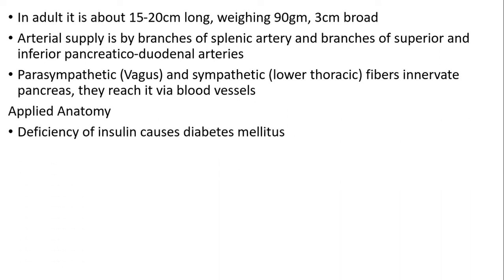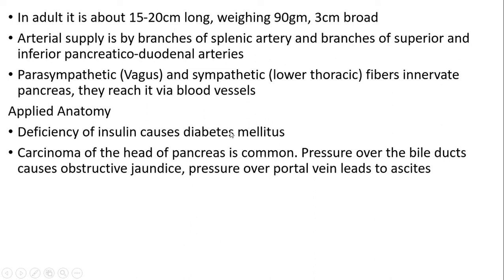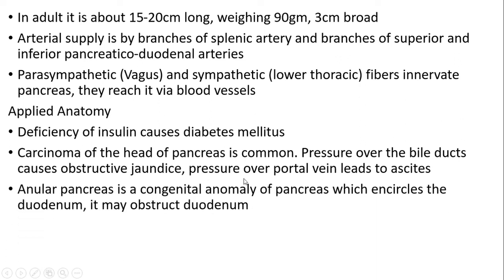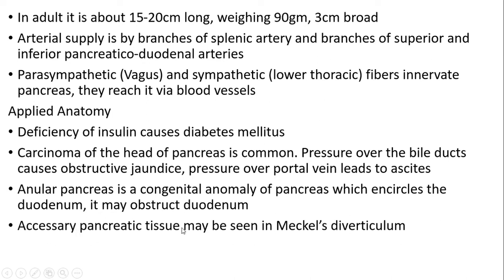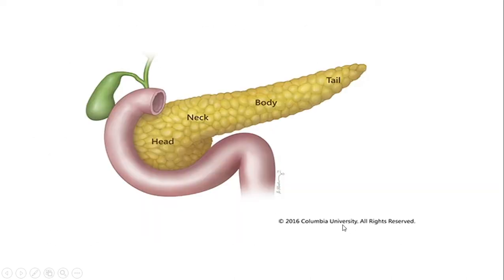Applied anatomy: deficiency of insulin causes diabetes mellitus. Carcinoma of the head of the pancreas is common. Pressure over the bile duct causes obstructive jaundice; pressure over the portal vein leads to ascites. Annular pancreas is a congenital anomaly of the pancreas which encircles the duodenum and may obstruct it. Accessory pancreatic tissue may be seen in Meckel's diverticulum.